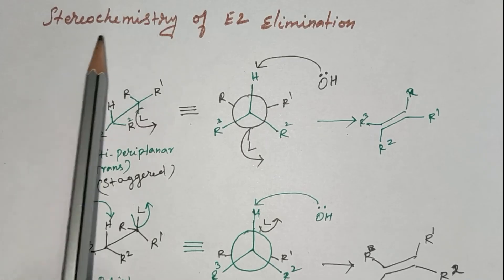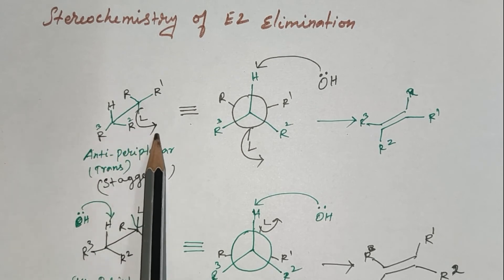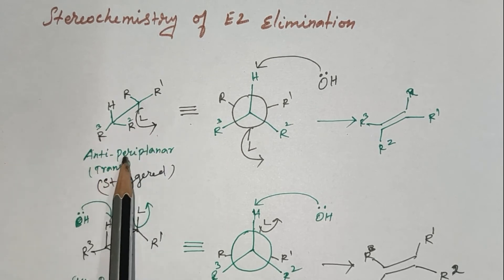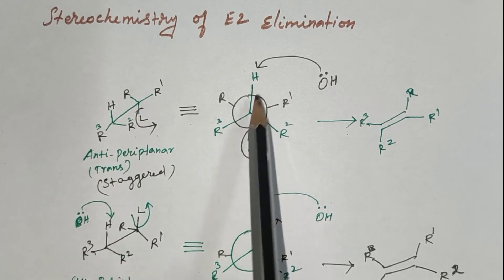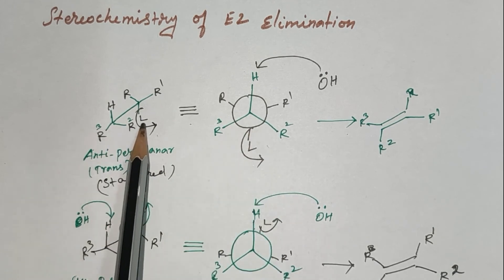Next, stereochemistry of E2 elimination. This structure is the Fischer projection formula. It is anti-periplanar structure in staggered position and trans compound. This is the Newman projection formula, staggered position. L is the leaving group.